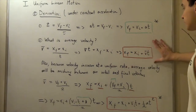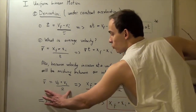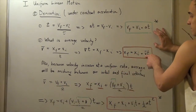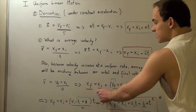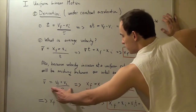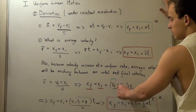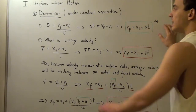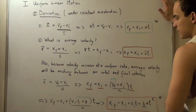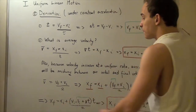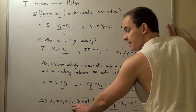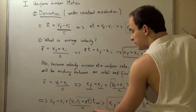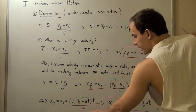Taking the average velocity formula and substituting it into the step two equation, we get: x final equals x initial plus (v final plus v initial divided by 2) times t. Then substituting the expression for v final from step one — v initial plus acceleration times time — into this equation, we get: x final equals x initial plus (v initial plus v initial plus a·t) divided by 2, all multiplied by time.